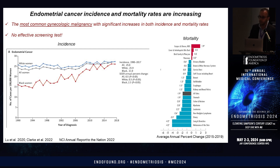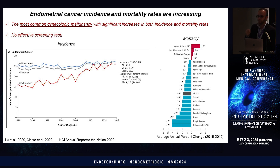Endometrium has a lot of concerning disease states. Endometriosis is one of the most common. Another disease requiring a lot of attention is endometrial cancer — it's increasing in both incidence and mortality. Right now it is the number one cancer type in this category; it has surpassed ovarian cancer and other types in its rate of mortality, and that rate of killing is increasing every year.